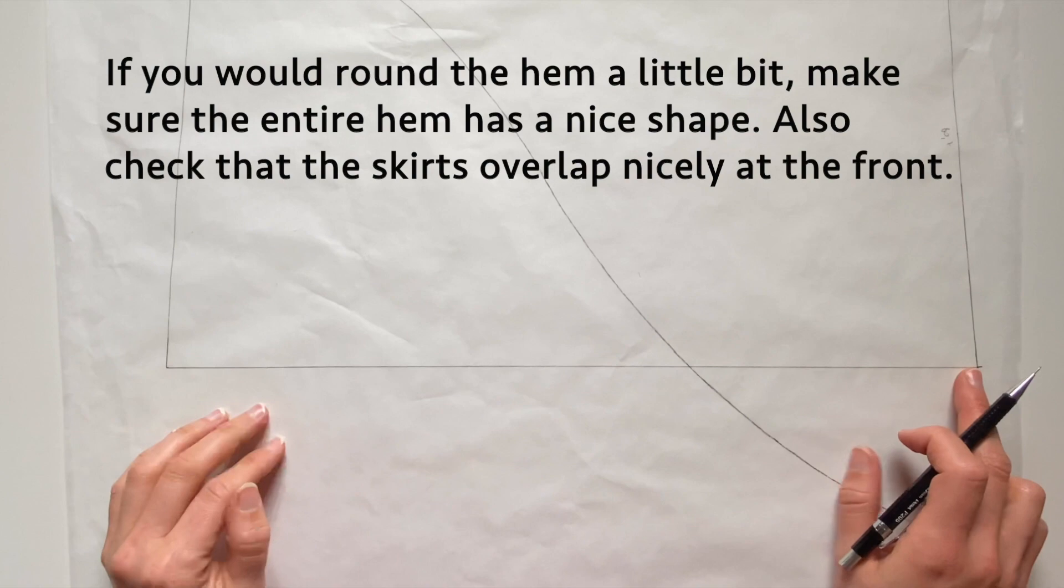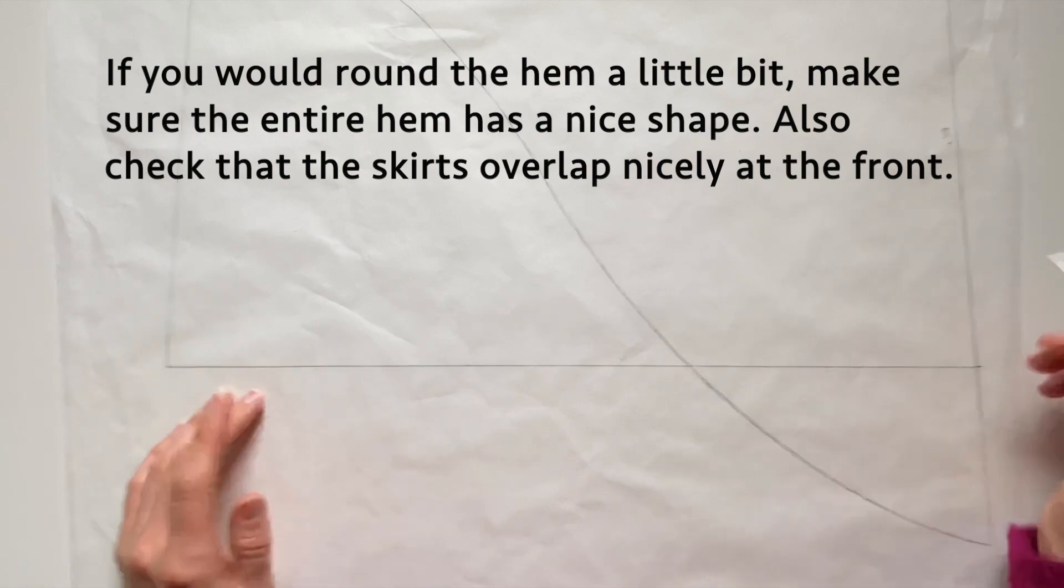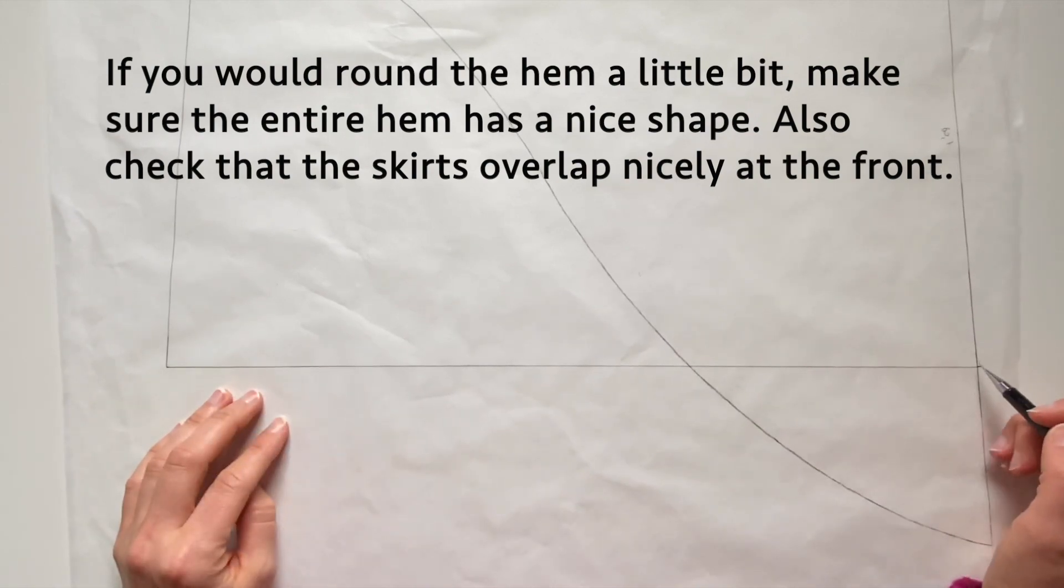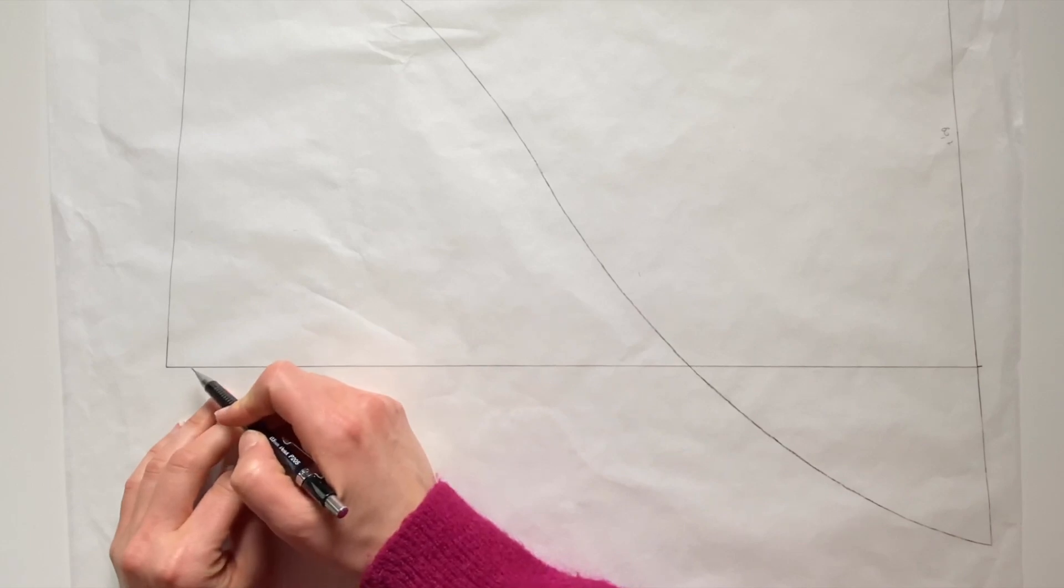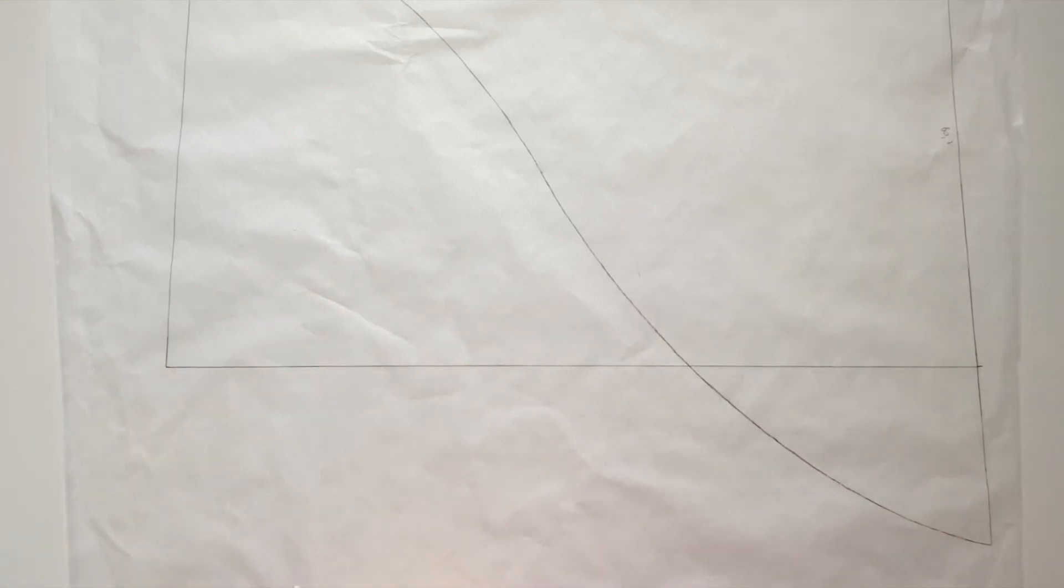It's a very straight line. If you want to round it a little as well, make sure your side seam stays the same length and also make sure you don't shorten too much at the center front.